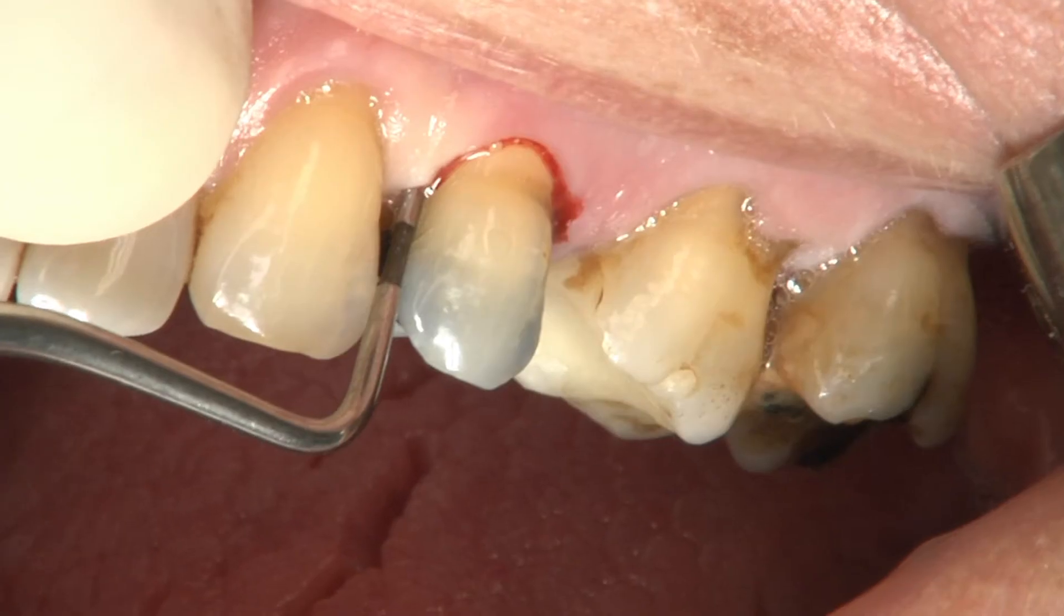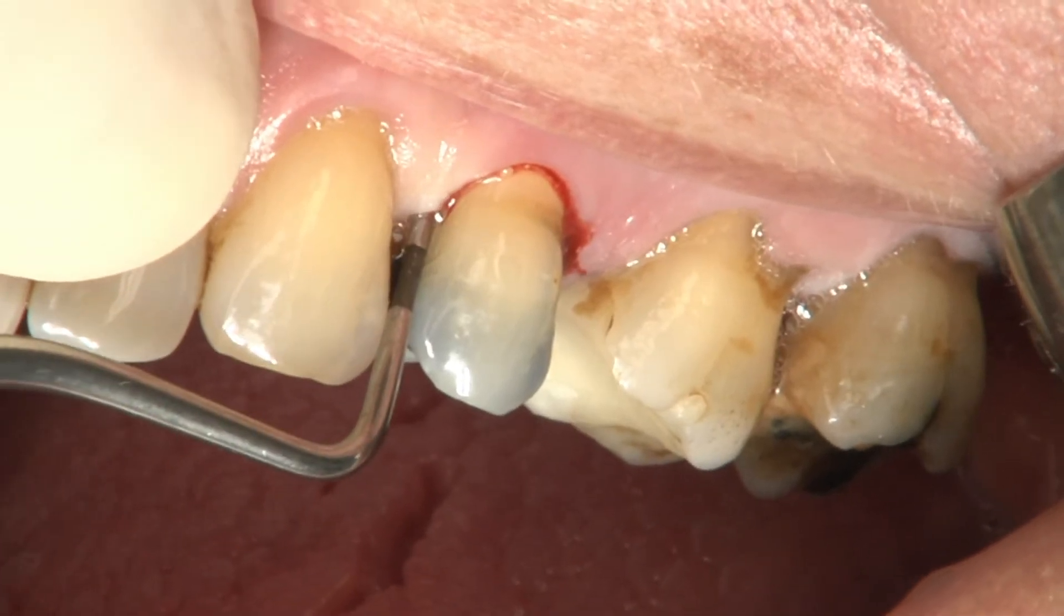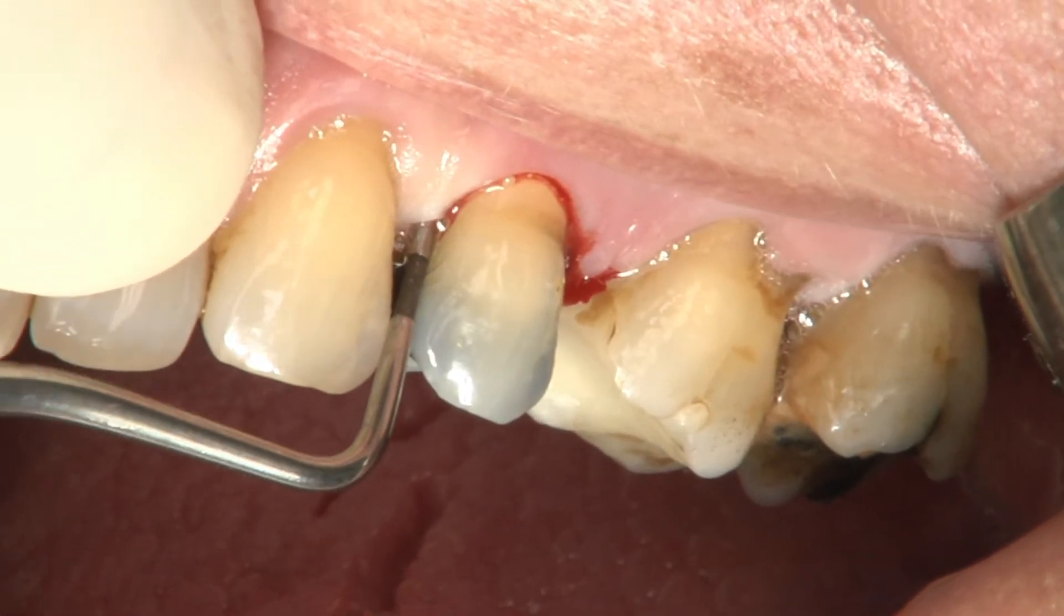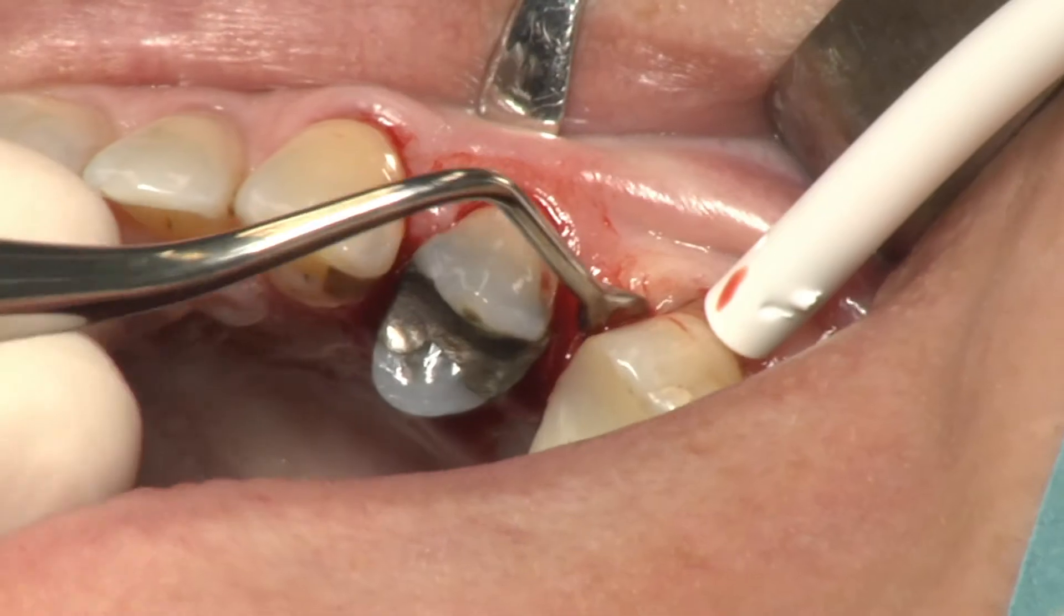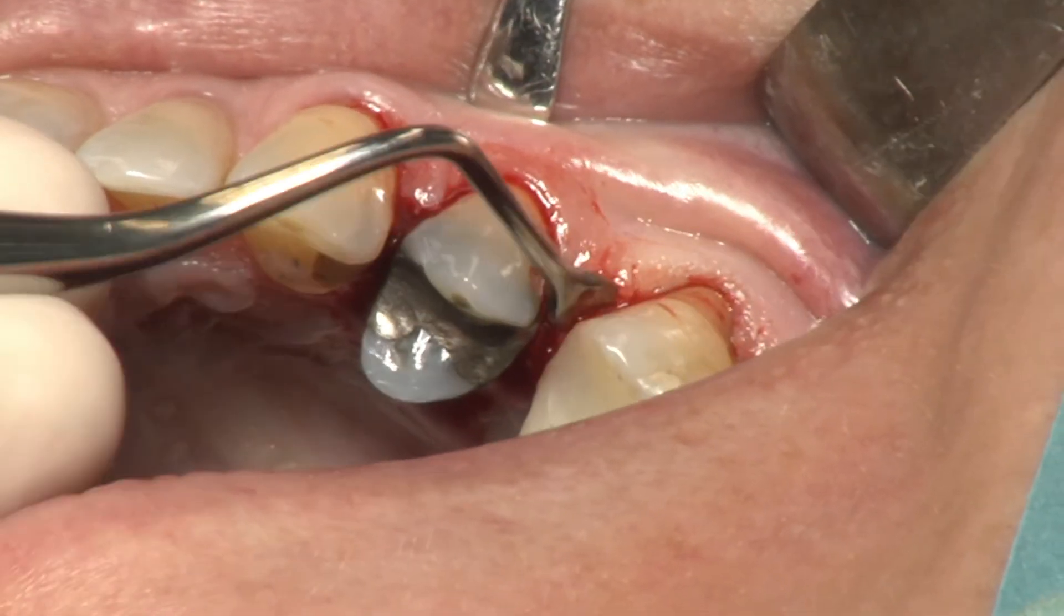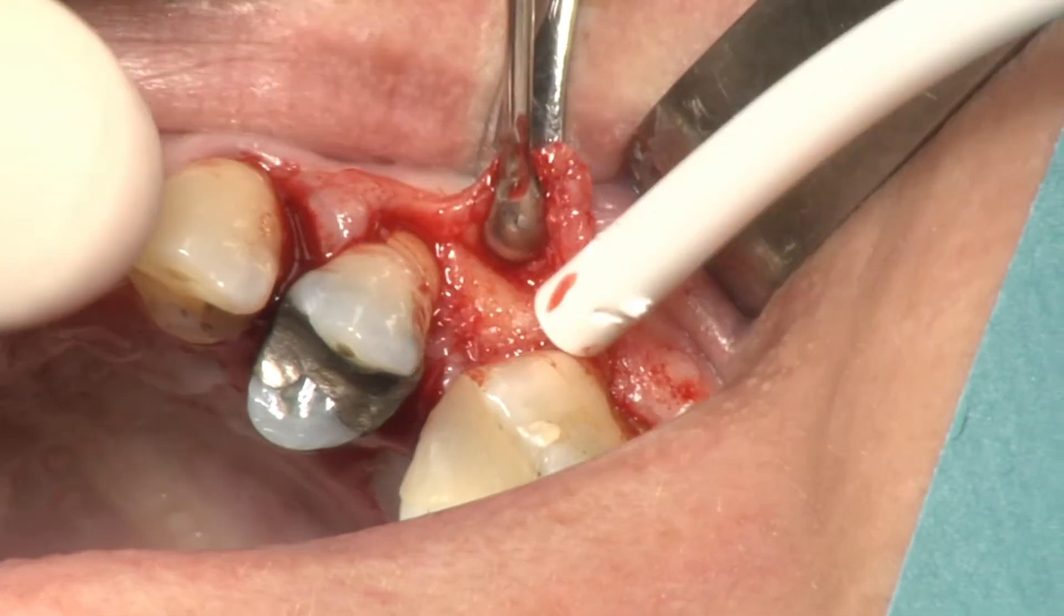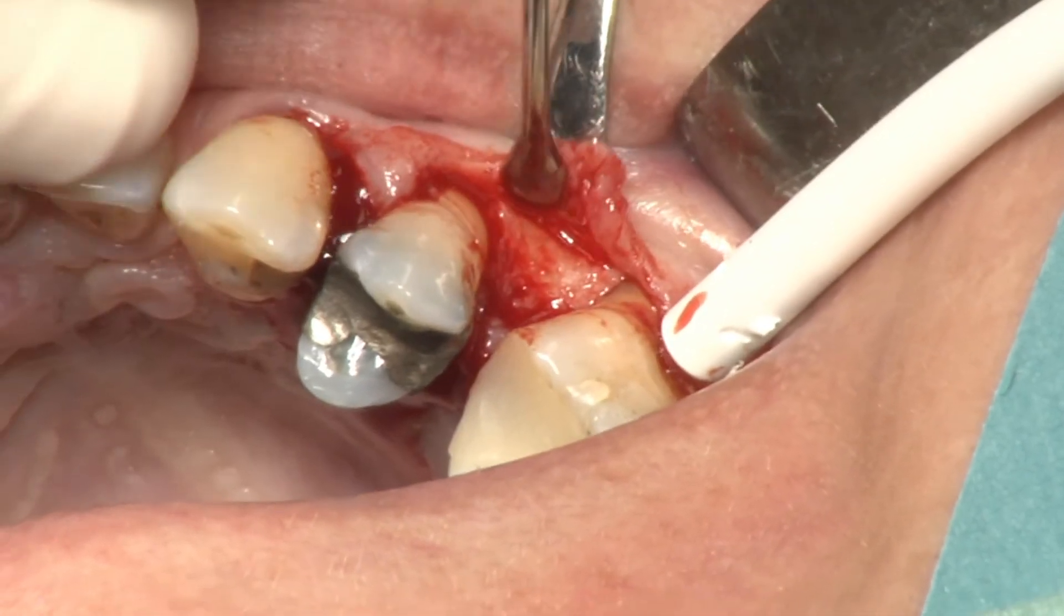In periodontology, repair means the formation of long junctional epithelial cells. In regeneration, in contrast, new clinical attachment including cementum, periodontal ligament, and alveolar bone are formed.